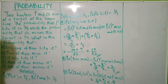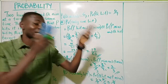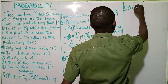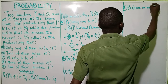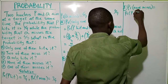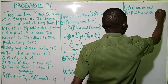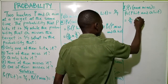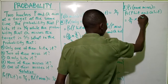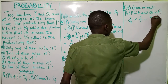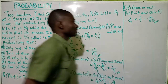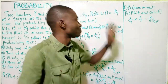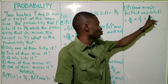Now D: none of them misses it. That means both of them hit the target — P hits and Q also hits. Probability that none of them misses equals probability P hits times probability Q hits, which is 2 over 9 times 1 over 7. That gives 2 times 1 equals 2, and 9 times 7 equals 63. So the answer is 2 over 63. The probability that both P and Q hit the target is 2 over 63.